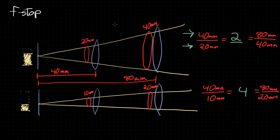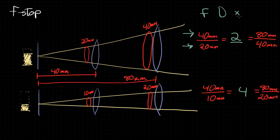This is why you can have different size lenses and know that, despite being different size or shape, as long as you set them to the same f-stop number, you'll be getting the same amount of light. So we have three numbers: focal length, diameter, and x representing the proportion between them — our f-stop number. How would we put these into a formula to see how they're all related?